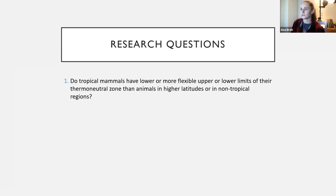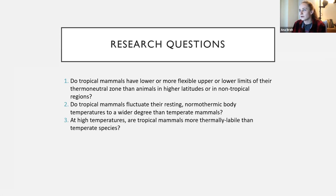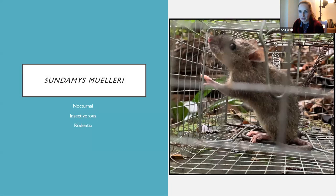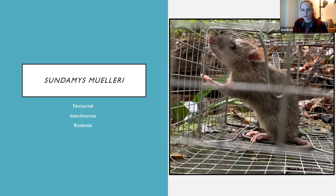My research question was: do tropical mammals have lower, more flexible upper limits of their thermal neutral zone? Do they fluctuate their resting body temperature to a wider degree than temperate mammals, given that this is where endothermy evolved? And at higher body temperatures, are tropical mammals more thermally labile than temperate species? Keep in mind we know a lot about temperate species and almost nothing about tropical ones. I studied a rat — Rattus muelleri — a nocturnal insectivorous rodent from Borneo. They carry a lot of zoonotic diseases, which I wasn't allowed to read about until after I got back to the US. They're not known for extreme heterothermia within the rodent family.